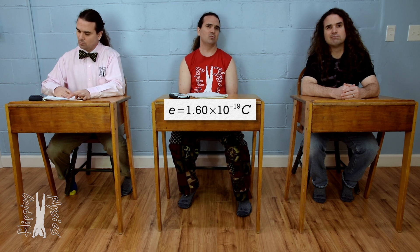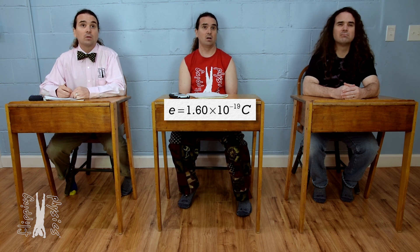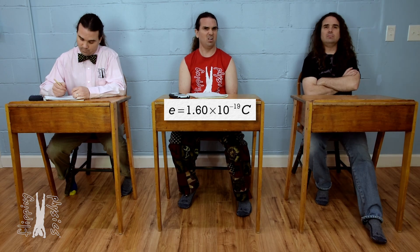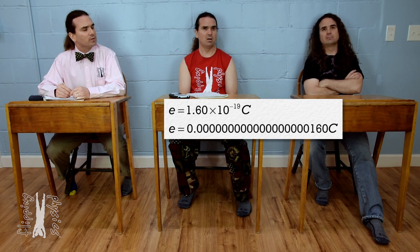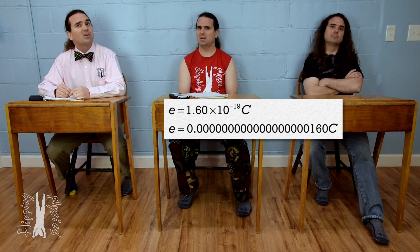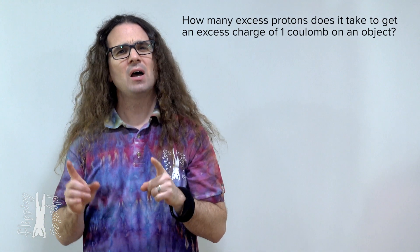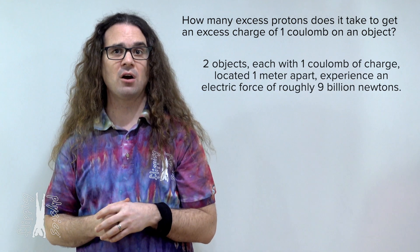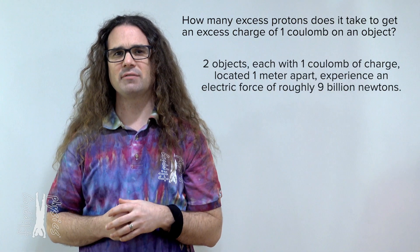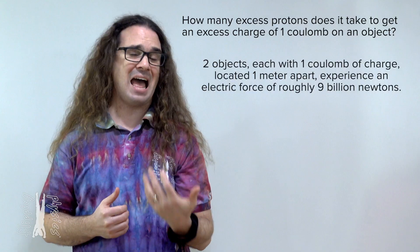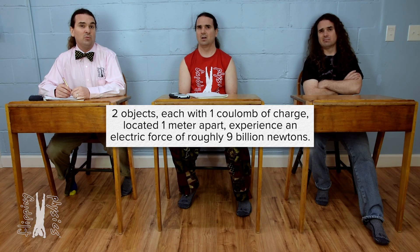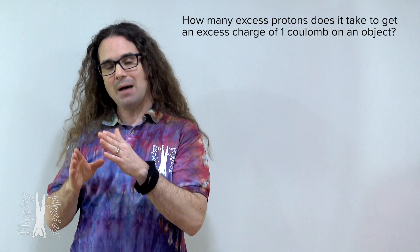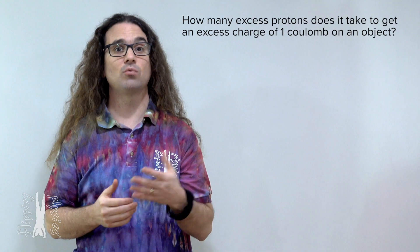1.60 times 10 to the negative 19 coulombs is a really small number — it is zero point 18 zeros and then 160 coulombs. How many excess protons does it take to get an excess charge of one coulomb on an object? One coulomb of charge is actually quite a bit of charge. If two objects each with one coulomb of charge are located one meter apart, the electric force on each of them would be roughly 9 times 10 to the ninth newtons, or roughly 9 billion newtons. We will learn how to calculate that electric force in our next lesson.